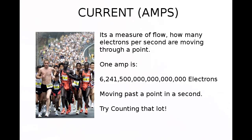That brings us to current — the flow of electrons — and the amp or ampere. The ampere is a measure of flow: how many electrons per second are moving through a point. Imagine a little man standing next to the wire checking off every electron that passes him. If you have a current of one amp flowing, that is in fact six million, two hundred and forty-one thousand, five hundred billion billion electrons moving past a point in a second.